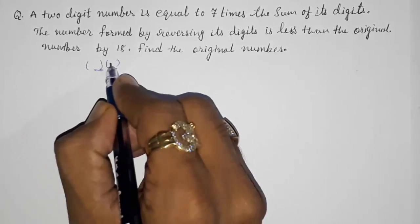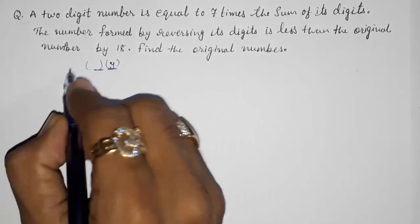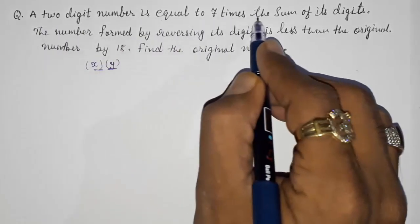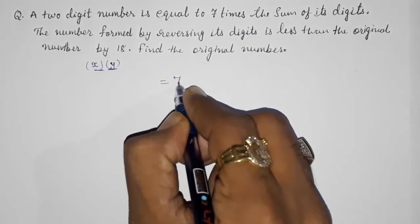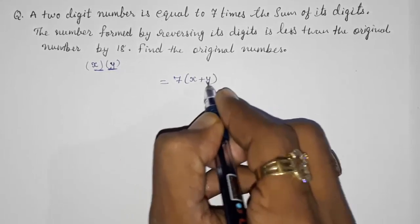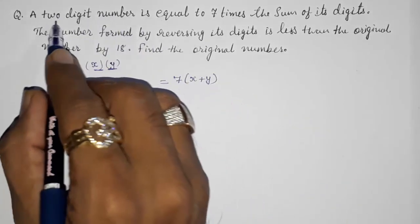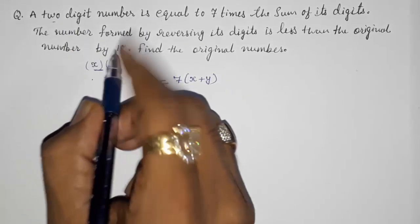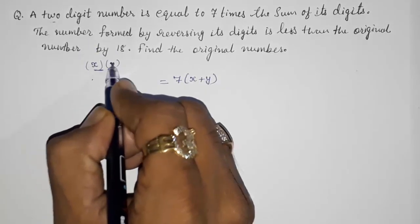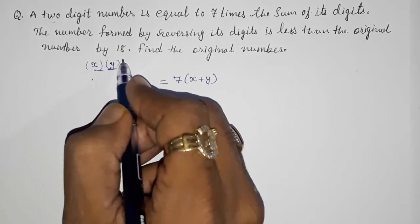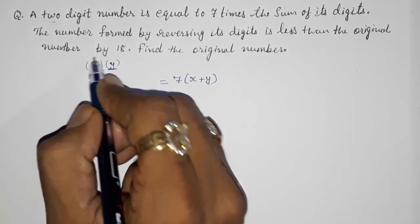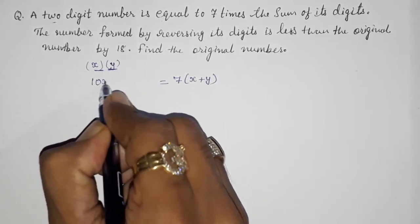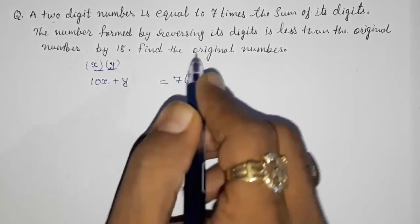The two-digit number equals seven times the sum of digits, meaning 10x plus y equals 7 times (x plus y). For example, 36 equals 3 times 10 plus 6. So 10x plus y equals 7x plus 7y. Rearranging: 10x minus 7x equals 7y minus y, giving 3x equals 6y.